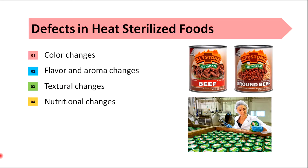Also, softening of fruits and vegetables due to hydrolysis of pectin materials, gelatinization of starches, and partial solubilization of hemicellulose can occur during the sterilization process. This can be overcome by adding calcium salts to the blanching water of fruits and vegetables, which can form insoluble calcium pectate that increases the firmness of the canned product.